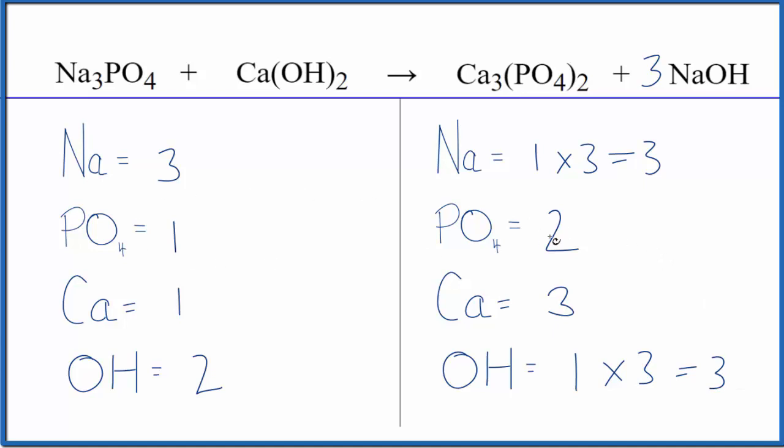Why don't we balance the phosphates next by putting a two here? So we have three times two, that changes our sodiums again to six. Then we have one phosphate times two, that balances the phosphates. Why don't we fix the sodiums? So instead of three here, let's make that six.